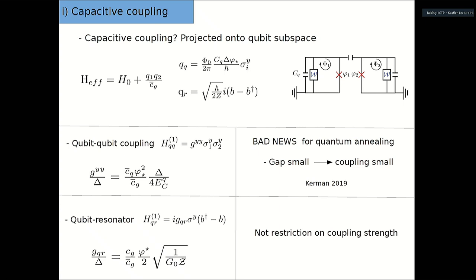For the qubit-resonator case, the coupling divided by the gap does not depend on the gap, which is much better. If the coupling scales inversely with the gap, this limits the coupling you can achieve — as discussed in a paper by Kerman — and you cannot use it for quantum annealing, because in annealing you decrease the gap to near zero and need a large interaction, but the coupling divided by the gap goes to zero. For the qubit-resonator, this restriction is absent.